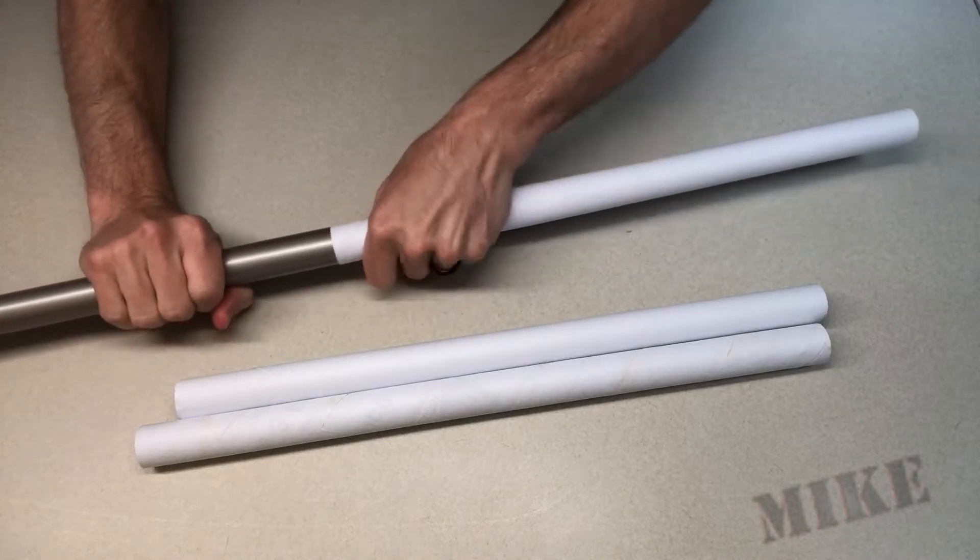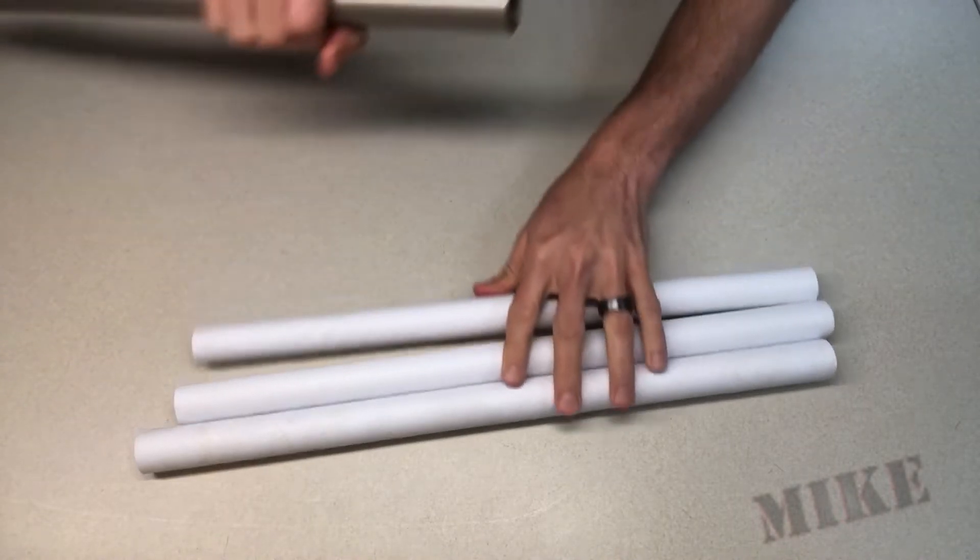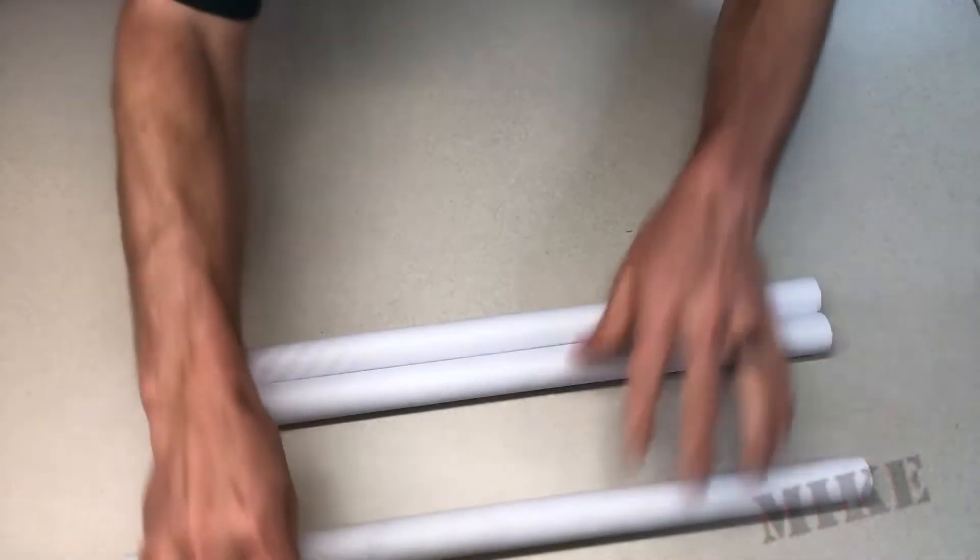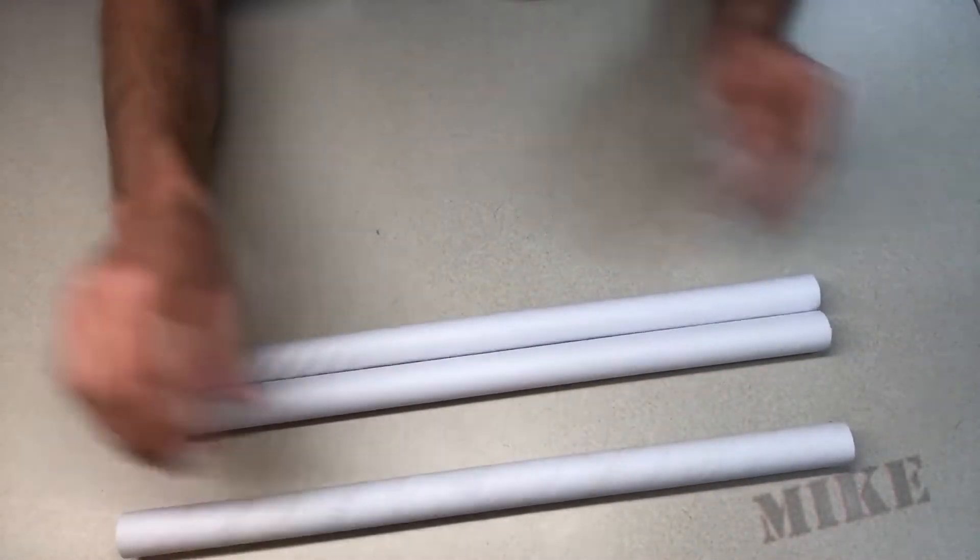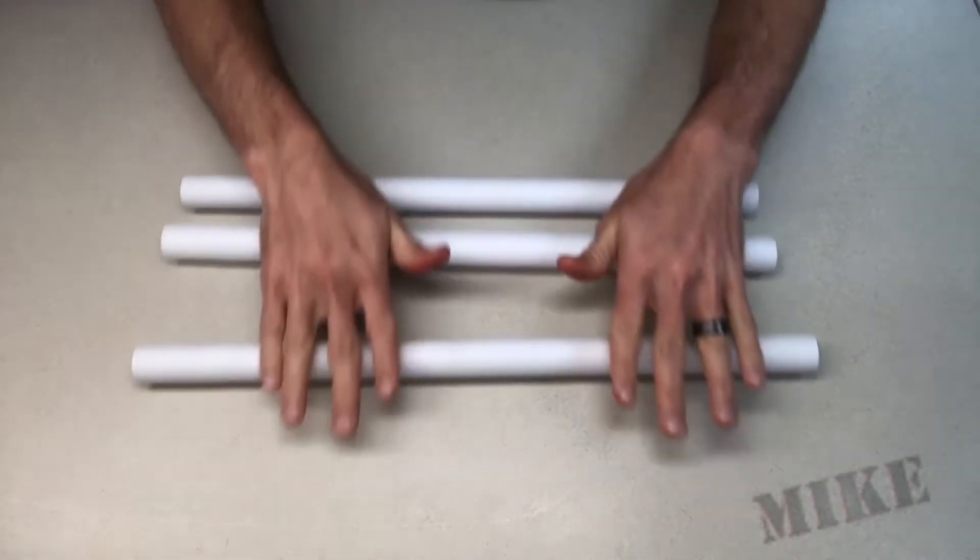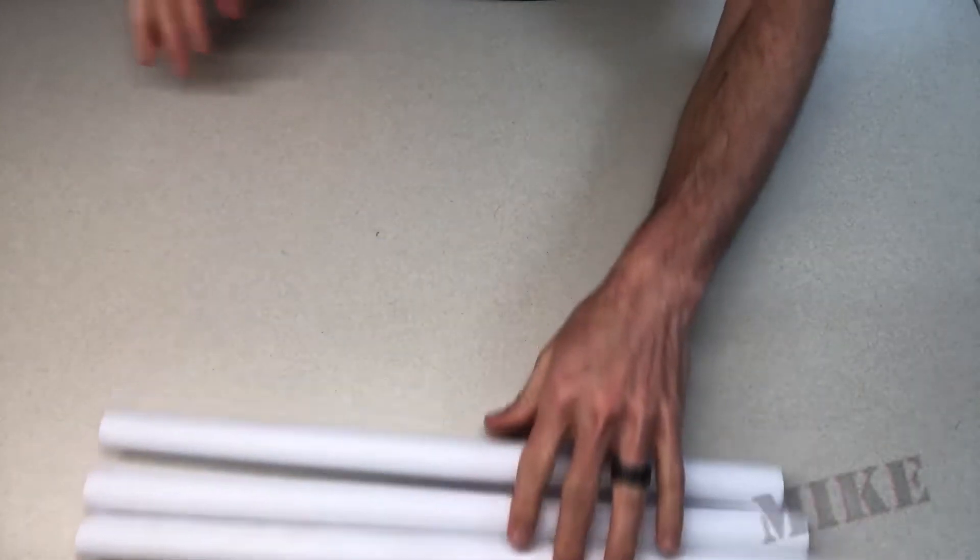So I started off by making three body tubes wrapped around this mandrel here that I had left over from an old lamp. These were spiral wound just scrap paper. I think these are four layers thick each. And you can see they're perfectly straight.